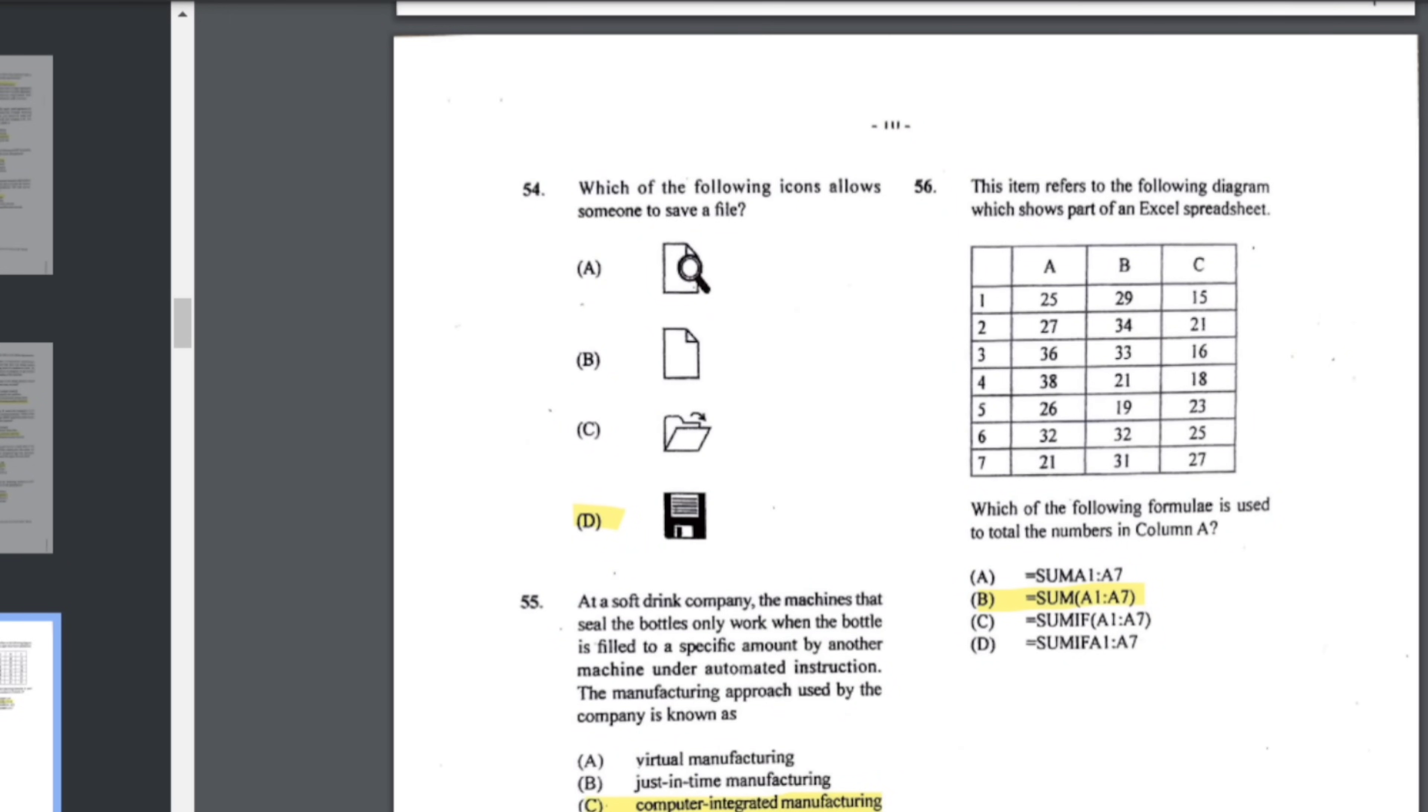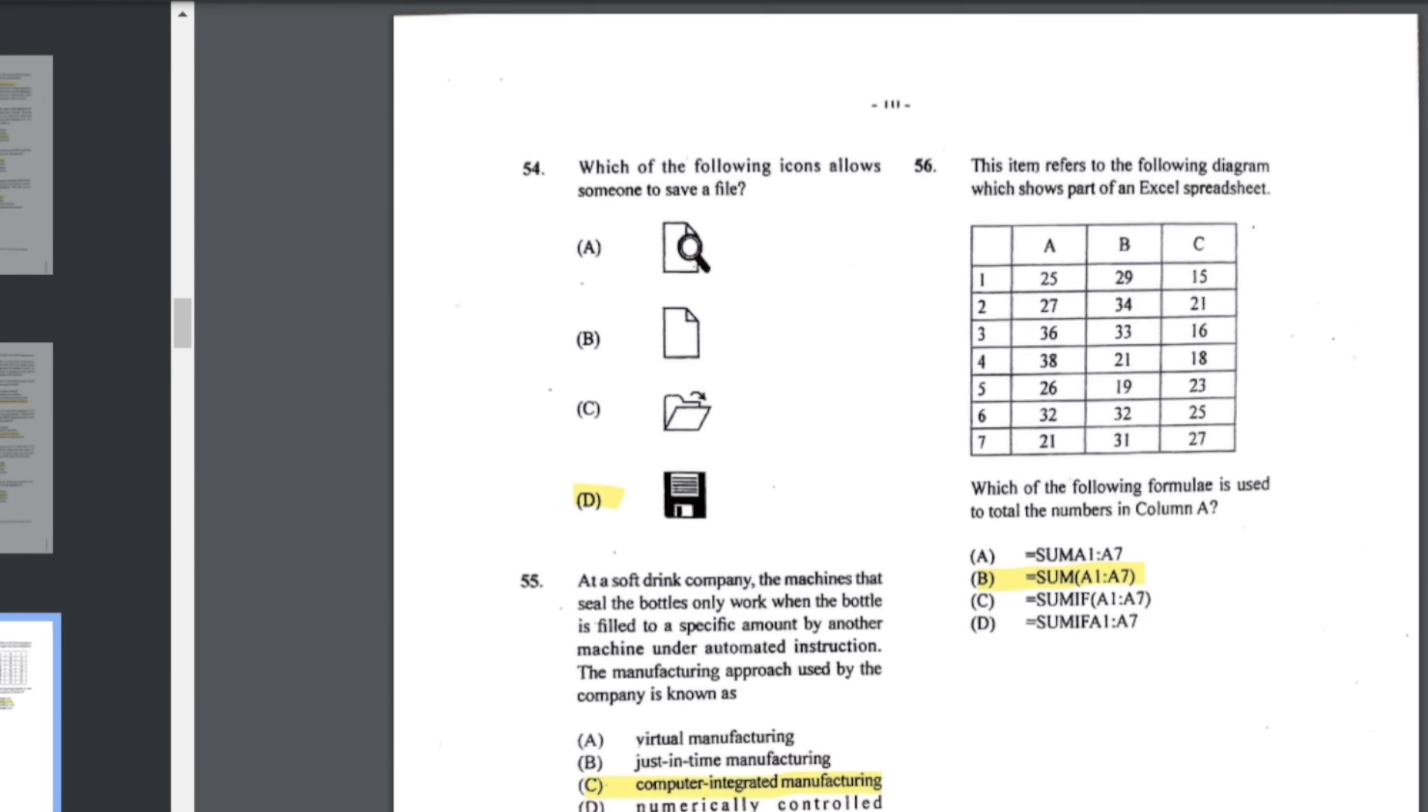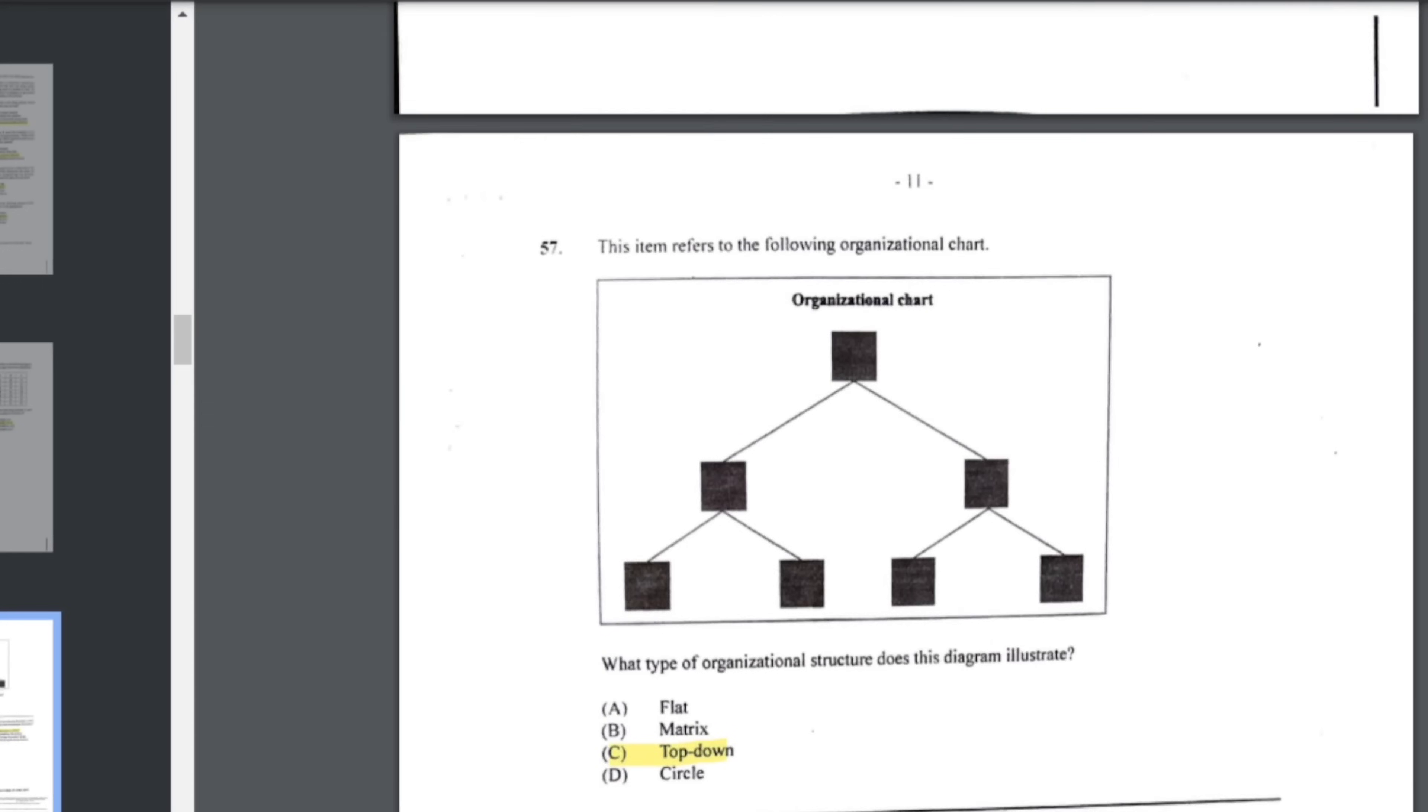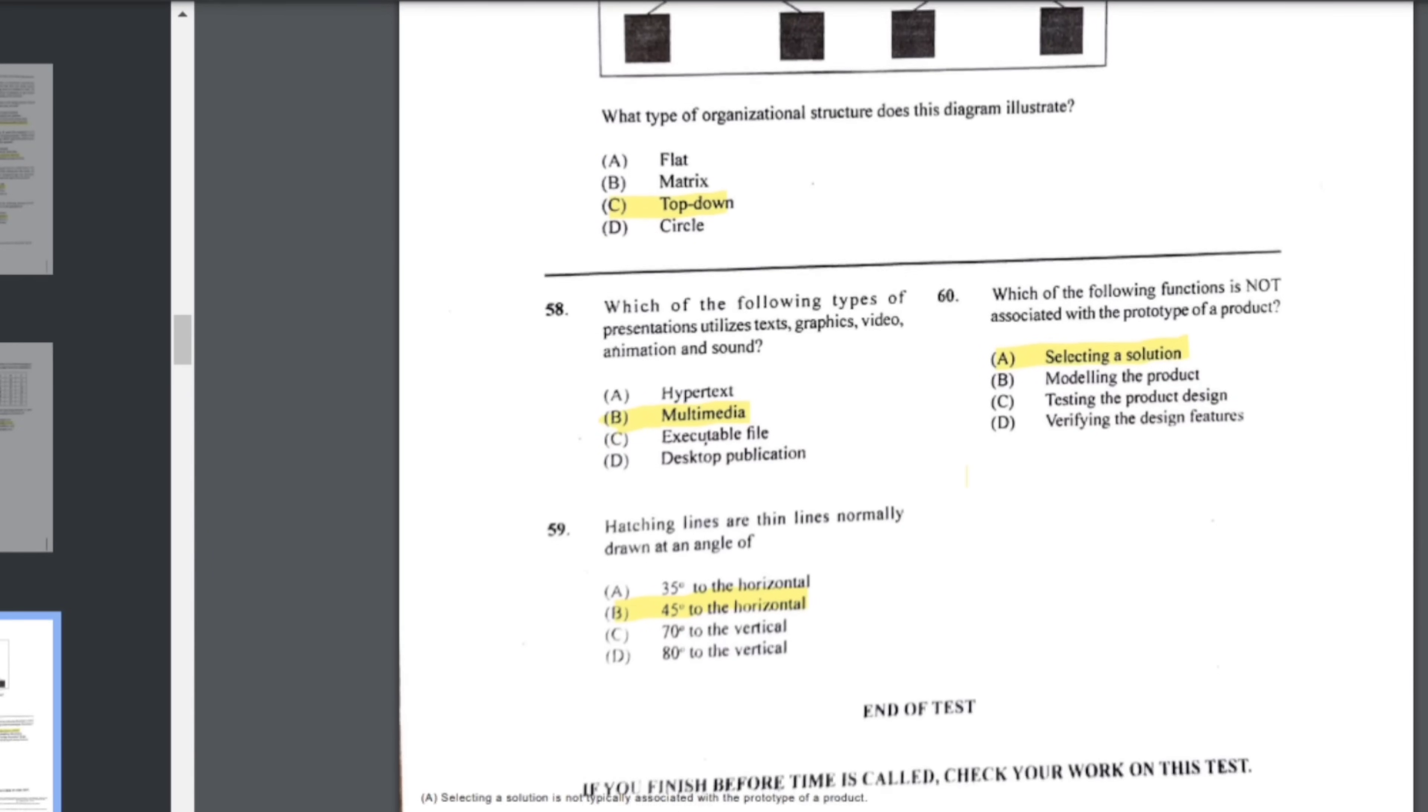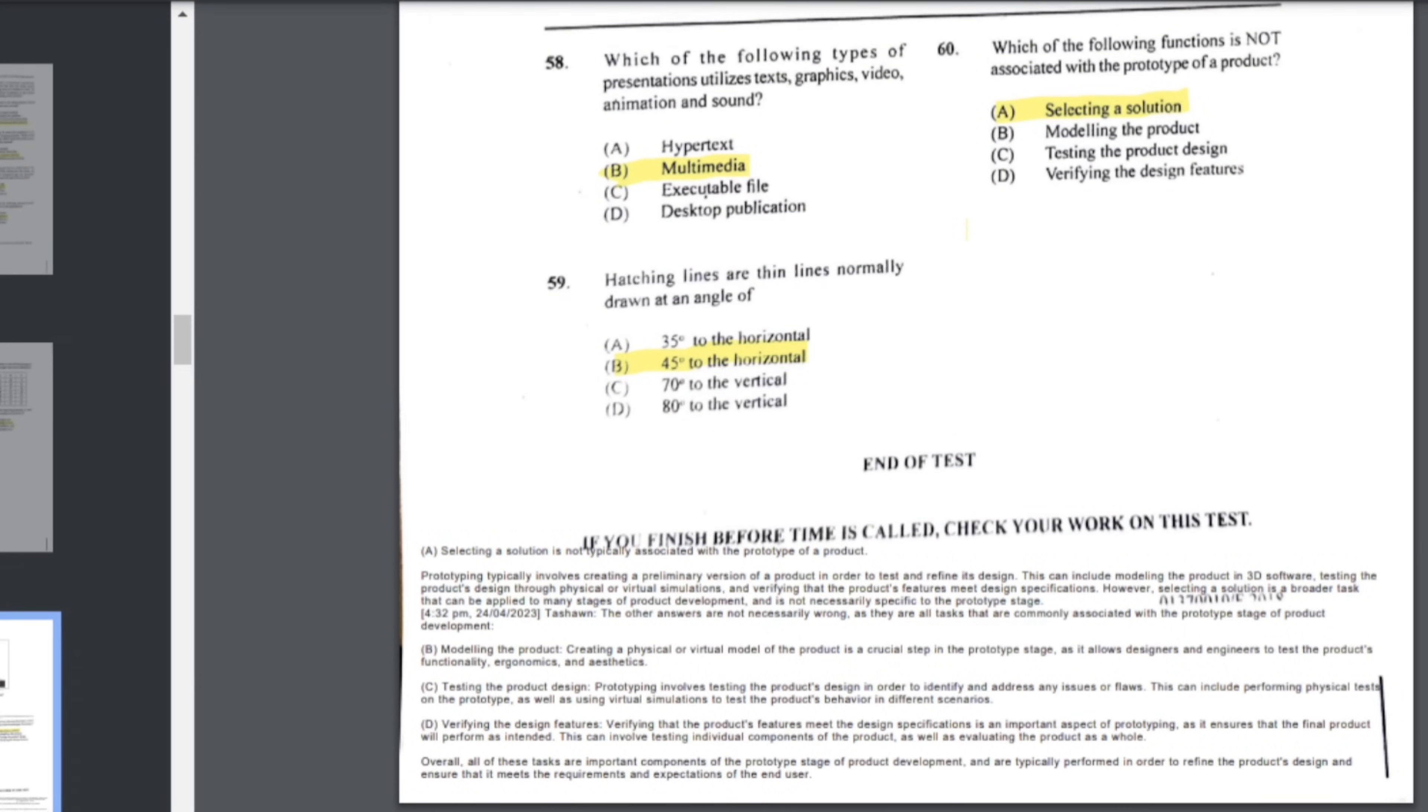Number 56: this item refers to the following diagram which shows parts of an Excel spreadsheet. Which of the following formula is used to total the number in column A? That would be B: equals sum open brackets A1:A7 close brackets. Number 57: this is a top-down structure. What type of organizational structure is illustrated there? Number 58: which of the following types of presentations utilizes text, graphics, videos, animations, and sound? That would be multimedia. Number 59: hatching lines are thin lines normally done at a 45-degree angle. Number 60 and final: which of the following functions is not associated with the prototype of a project? That is selecting solution.